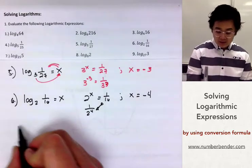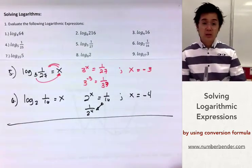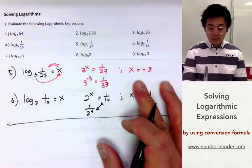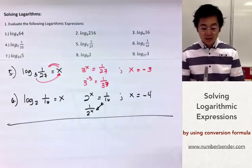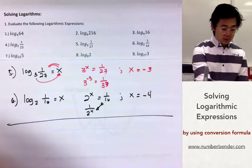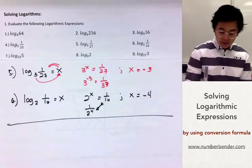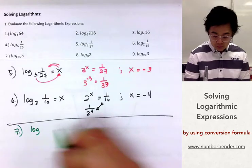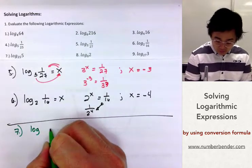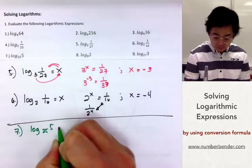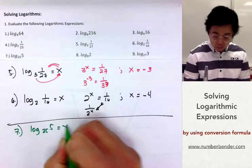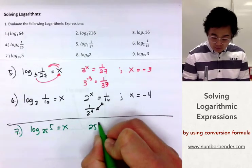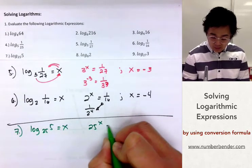Now let's try answering the third set of problems. We have logarithm of 5, base 25, equated to x, which converts to 25 raised to x equal to 5.